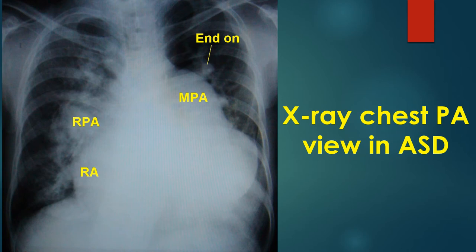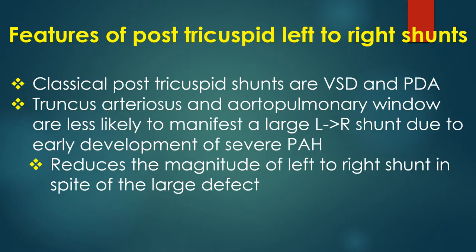Peripheral pruning of pulmonary vessels indicates severe pulmonary hypertension. The classical post-tricuspid shunts are ventricular septal defects and patent ductus arteriosus. The other post-tricuspid shunts — truncus arteriosus and aortopulmonary window — are less likely to manifest a large left to right shunt due to the early development of severe pulmonary hypertension, which reduces the magnitude of left to right shunt in spite of a large defect.